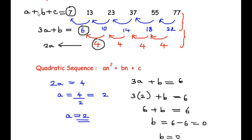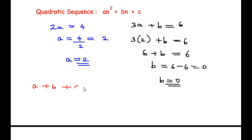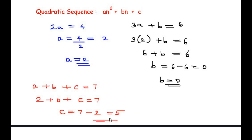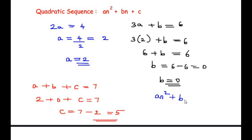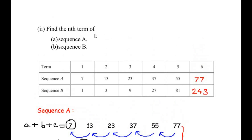Finally, a + b + c equals 7 (the first term of the sequence). Substituting a = 2 and b = 0: 2 + 0 + c = 7, so c equals 5. Now substituting into an² + bn + c: with a = 2, b = 0, and c = 5, the nth term of sequence A is 2n² + 5.